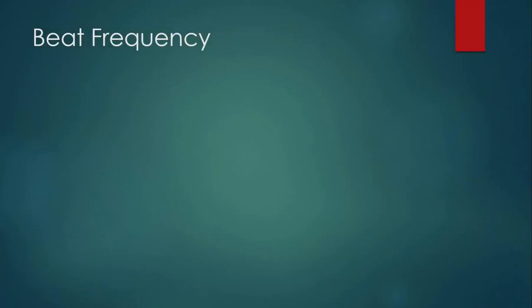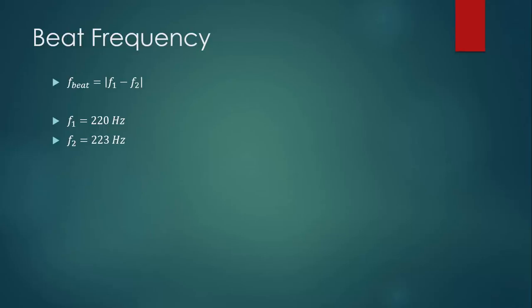There's a simple equation that goes along with beats: the beat frequency — how many times per second the sound fluctuates from loud to quiet — is simply the absolute value of the difference between the frequencies of the two waves. For instance, if we had one wave at 220 Hz and another at 223 Hz, the beat frequency would be 3 Hz. That means three times every second we would hear the sound fluctuate between loud and quiet.